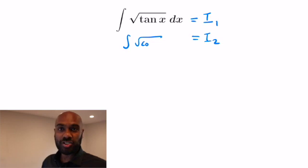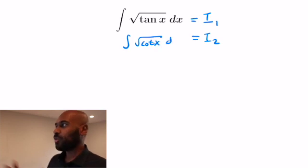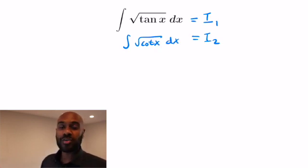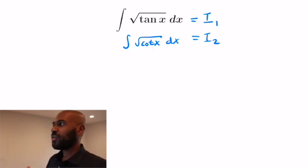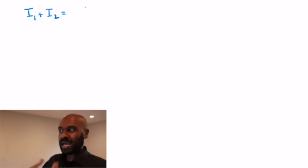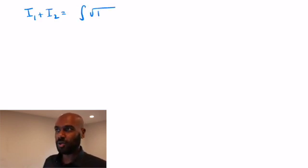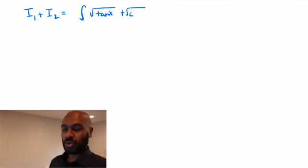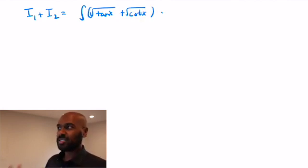The symmetry we're going to use is interchanging the role of sine and cosine. If we do that, tangent will become cotangent, so we'll write i2 as the integral of the square root of cotangent x dx. To figure out i1, we're going to symmetrize by adding and subtracting these two integrals. So the sum is the integral of the square root of tan x plus the square root of cotangent x dx.